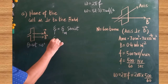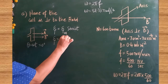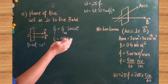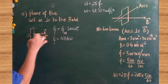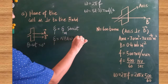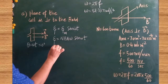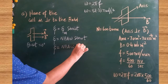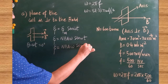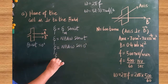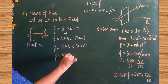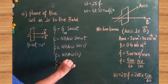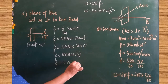We substitute: ξ = NBAω sin(ωt). The maximum peak EMF is ξ_m = NBAω. The instantaneous EMF becomes ξ = NBAω sin(0°). Since sin(0°) = 0, the instantaneous EMF in this position is 0 volt. That is the answer for case A.